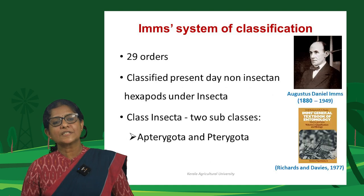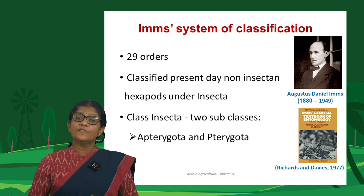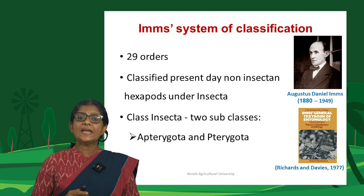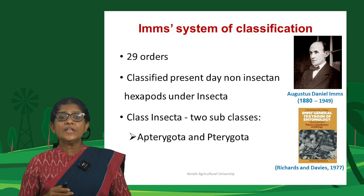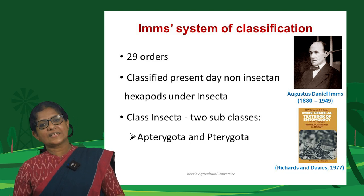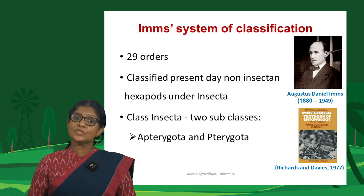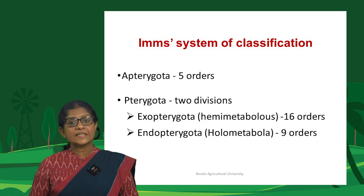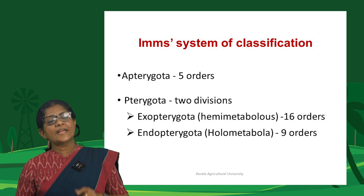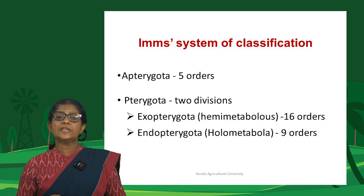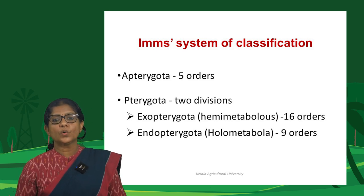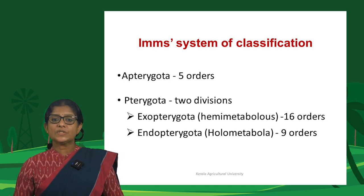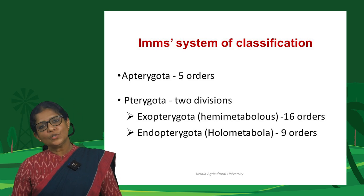The IMMS system was one of the most popular systems, taught for more than two decades in academic institutions. IMMS recognized 29 insect orders, and non-insectan hexapods were then treated under Insecta. Class Insecta was categorized into two subclasses: Apterygota (five orders, including four non-insectan hexapods) and Pterygota (divided into division Exopterygota with 16 orders of hemimetabolous insects, and division Endopterygota with 9 orders of holometabolous insects).